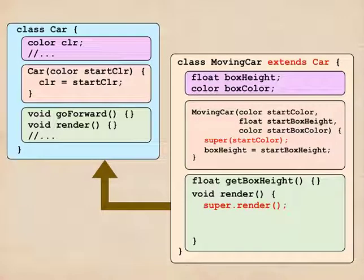And the answer is to use super again. Remember that super refers to the object that we built by calling the super class's constructor. So to call the render procedure in the super class car, we just send the message render to the object super. And we do that in the usual way, super.render.